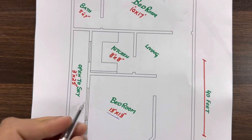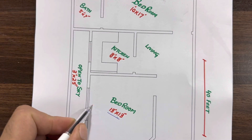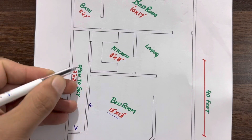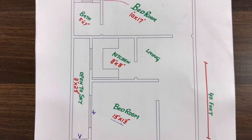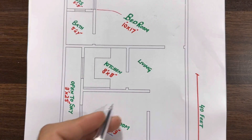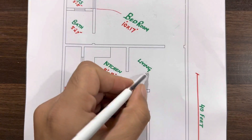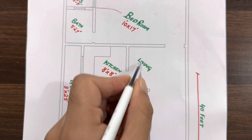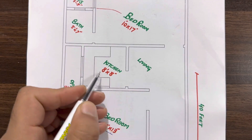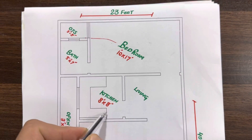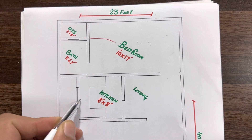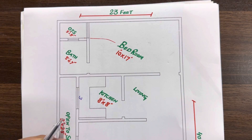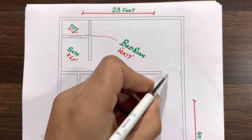For this bedroom, there is a large window of 6 feet opening to the open-to-sky area for proper ventilation. Next, you can see this is a living room which you can also use as a sitting area. This is the kitchen — size of the kitchen is 8 feet by 8 feet — and it has a window of 4 feet width opening to the open-to-sky area.